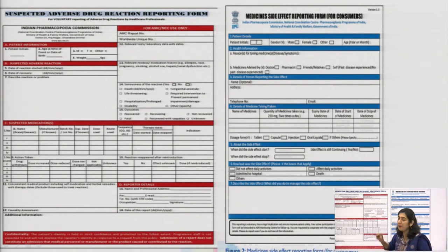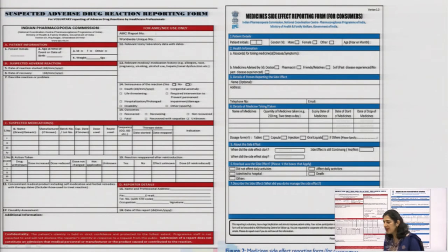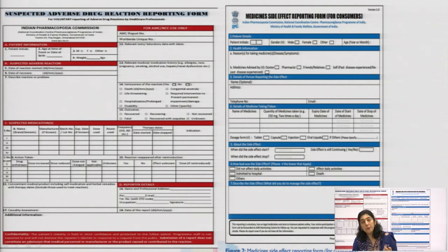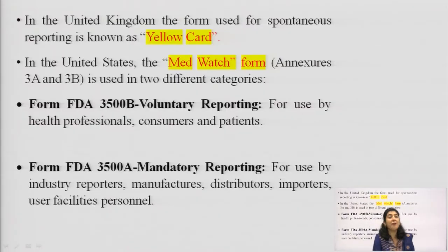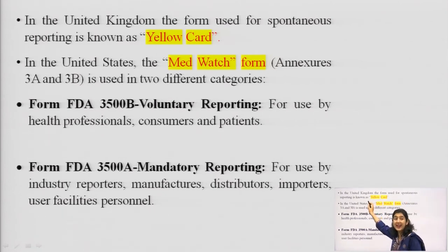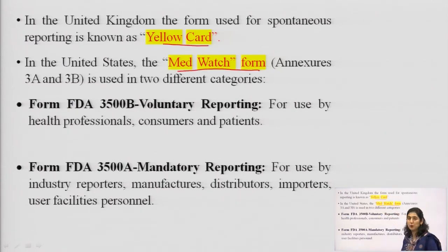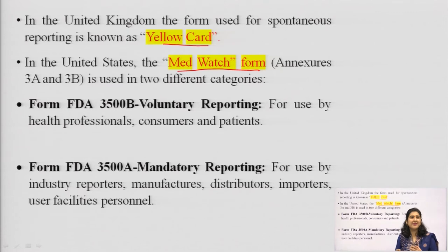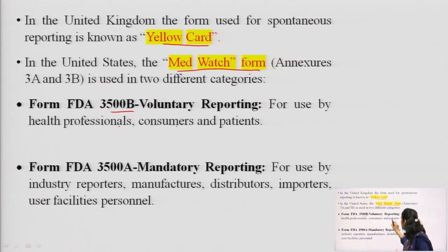The red form is for voluntary reporting of ADRs by healthcare professionals. There is another form called the Medicine Side Effect Reporting Form, mainly for consumers, which is a blue form. So consumers should fill the blue form and doctors should fill the red form. In the UK, the form used for spontaneous reporting is known as the Yellow Card — please remember the Yellow Card system. In the US, the MedWatch form is used: Form FDA 3500B for voluntary reporting, used by healthcare professionals, consumers, and patients.